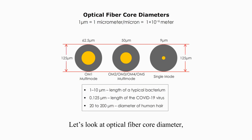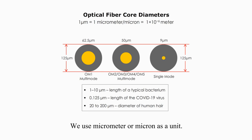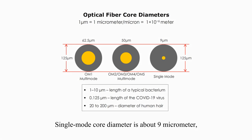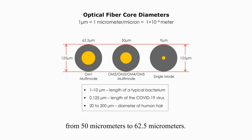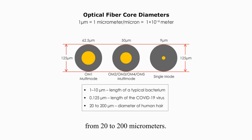Let's look at optical fiber core diameter — single-mode fiber versus multi-mode fiber. Fiber core size is so tiny that we cannot see it without special equipment. We use micrometer or micron as a unit. One micrometer is 0.000001 meter, or one-millionth of a meter. Single-mode core diameter is about 9 µm, and multi-mode fiber core diameter is from 50 µm to 62.5 µm. The length or size of typical bacteria is about 1 to 10 µm. The diameter of a human hair ranges from 20 to 200 µm.